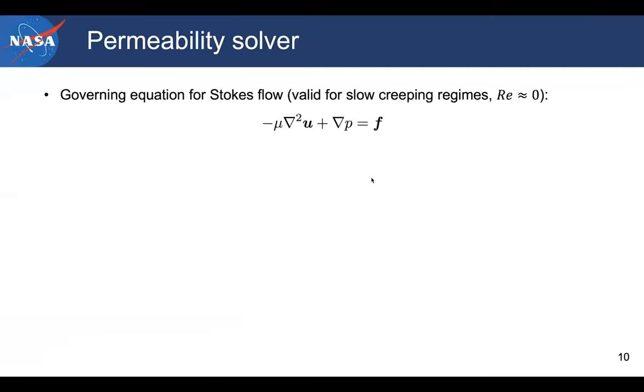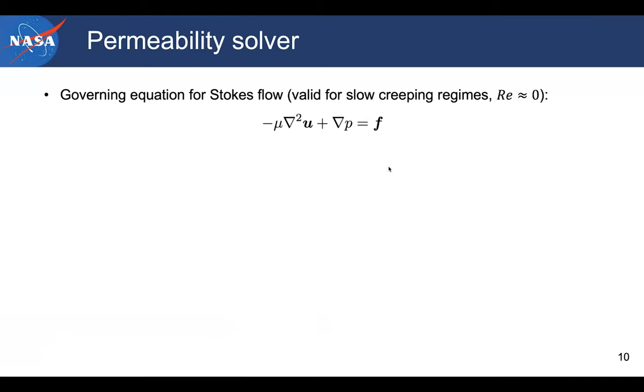Starting from the theory, what we're basically solving in our permeability solver is Stokes flow, which is only valid for slow creeping regimes. Basically, the permeability is a material property depending on the microstructure. This means that we're only considering regimes where the Reynolds number is close to zero.